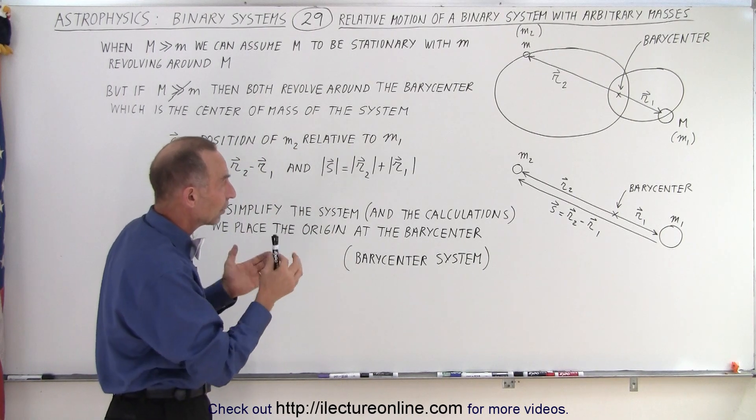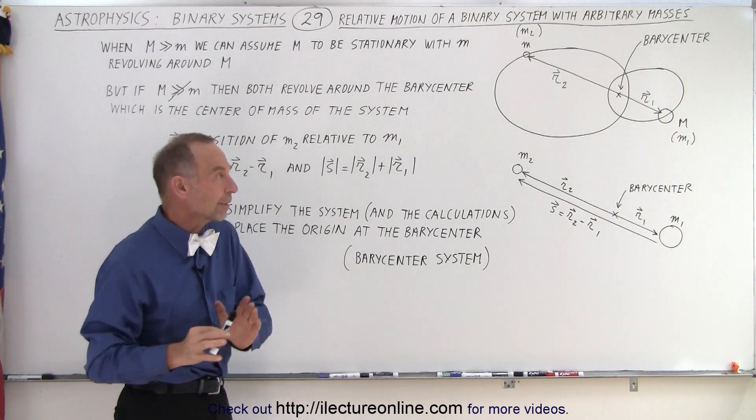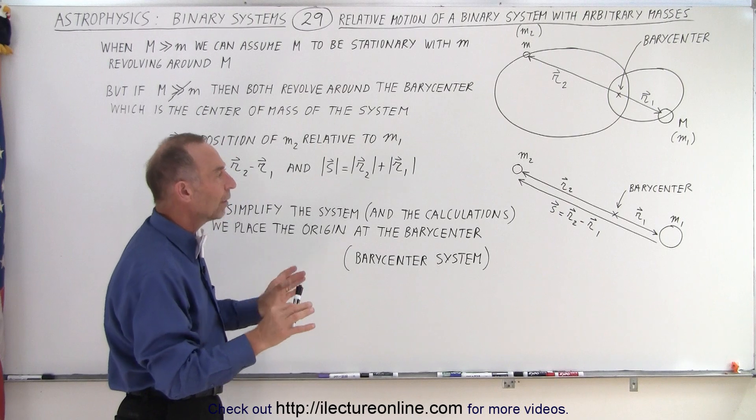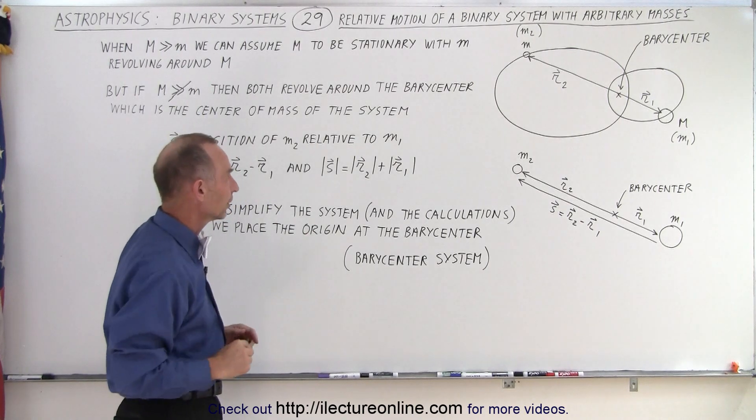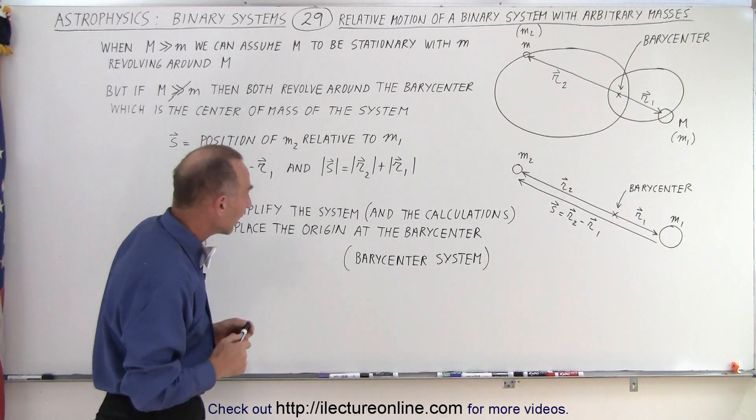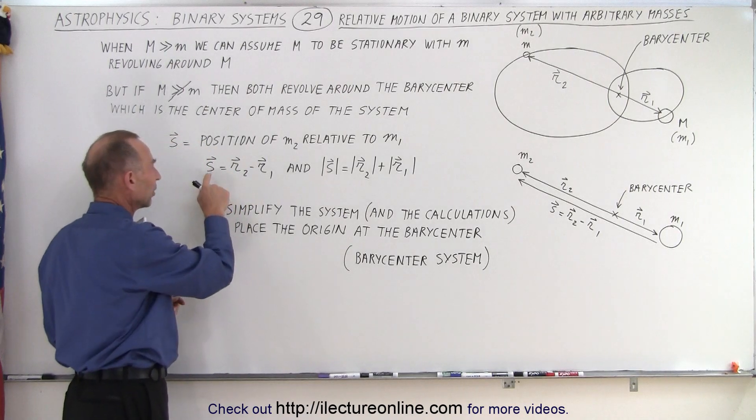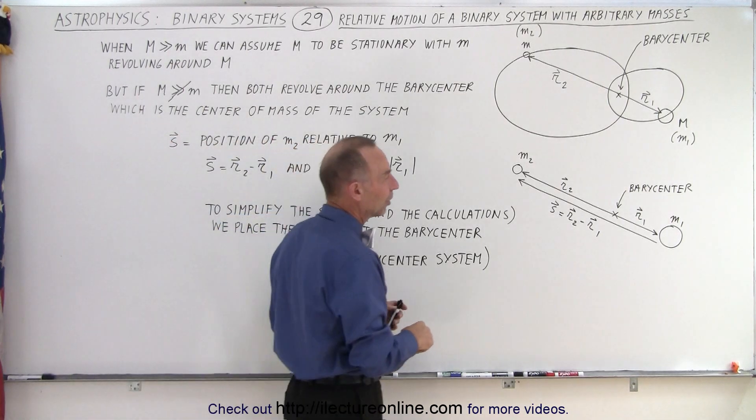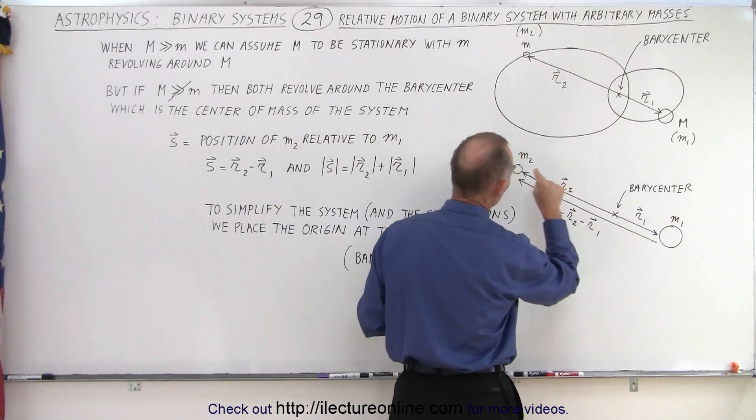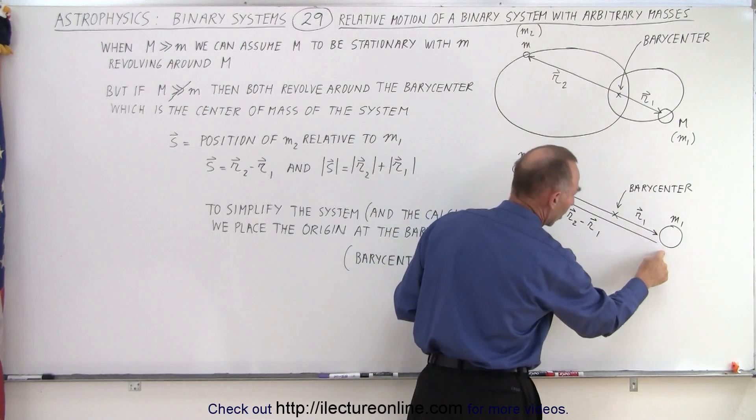So that's why we're dealing with what we call arbitrary masses, where one is not much larger than the other. So when that happens, we then realize we have another vector called the position vector, which indicates the position of the small object relative to the large object, the position of the planet relative to the sun.